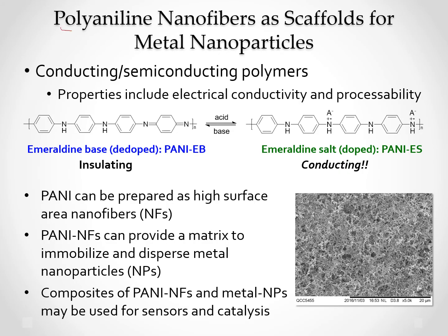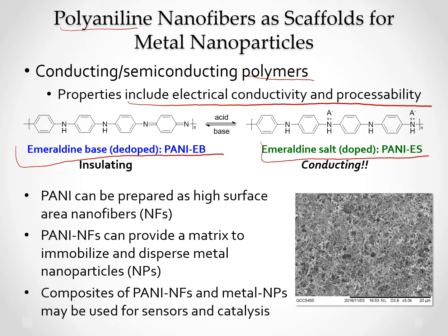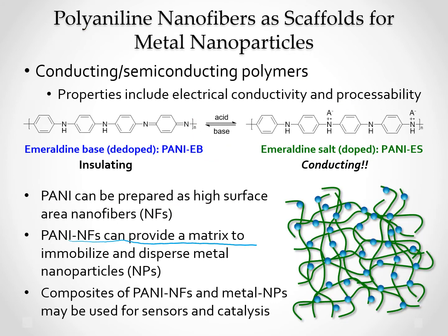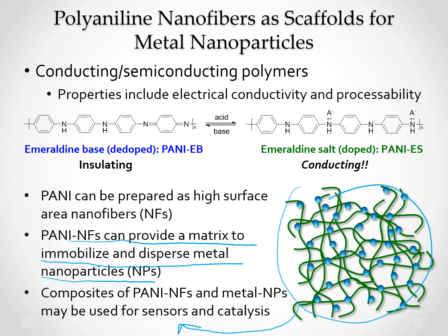A little overview. Polyaniline is a polymer which has properties of both metals and plastics — that means it can have electrical conductivity and processability. Polyaniline, or PANI, has two forms: emeraldine base form and emeraldine salt form. It can switch between them using acid-base treatments. PANI can form higher surface area nanofibers, which can be used as a matrix to immobilize and disperse metal nanoparticles for sensors and catalysis.